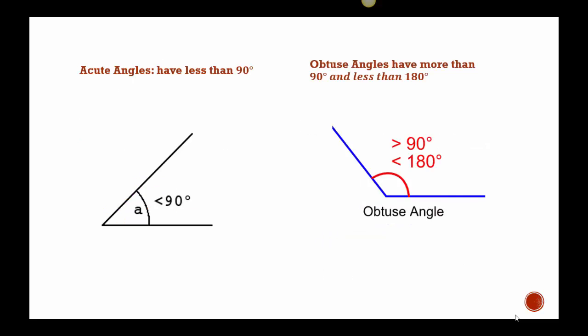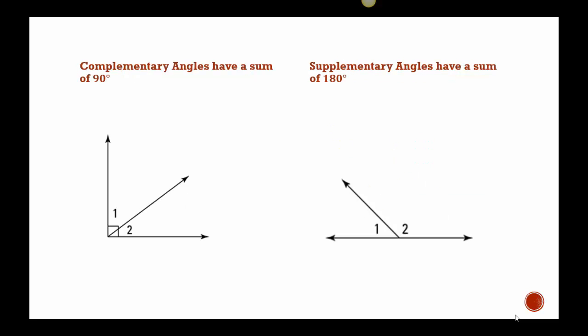Angles that are less than 90 are called acute. Angles that are between 90 and 180 are called obtuse. Angles that add up to 90 are called complementary, while angles that add up to 180 are called supplementary.